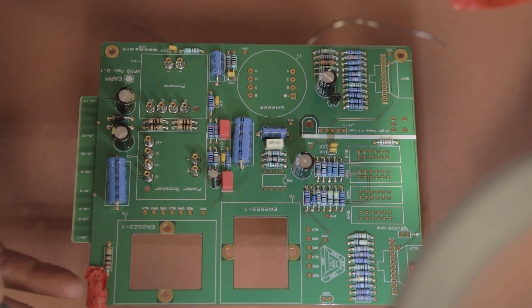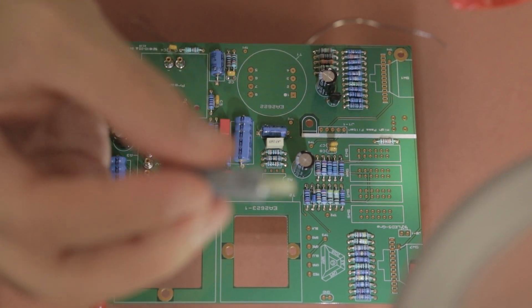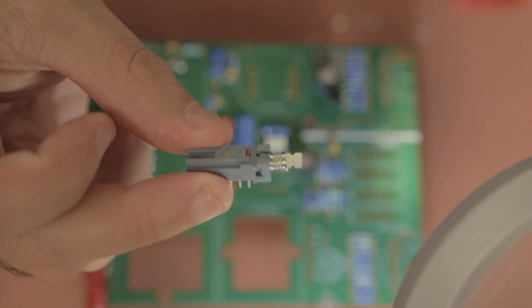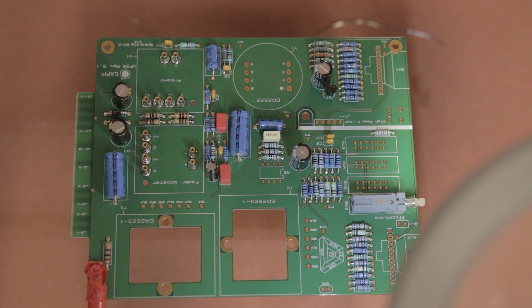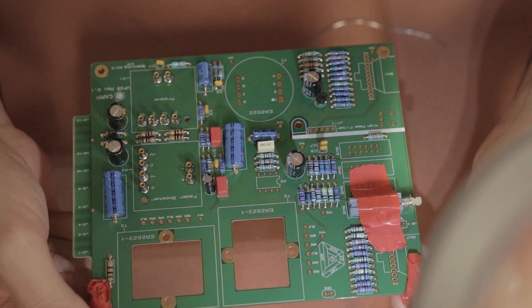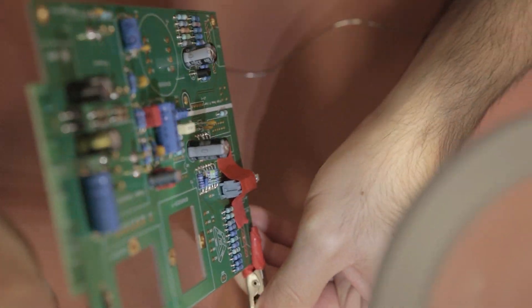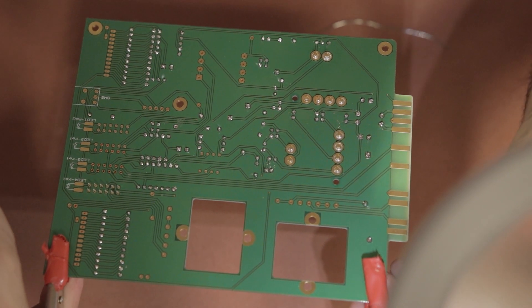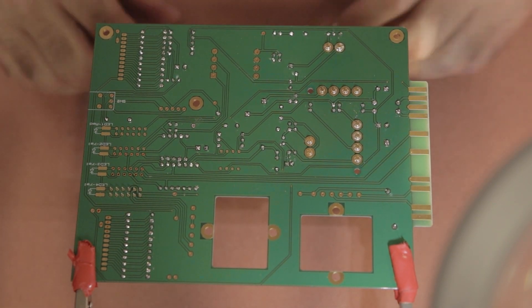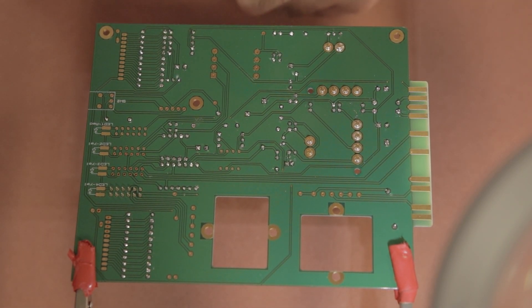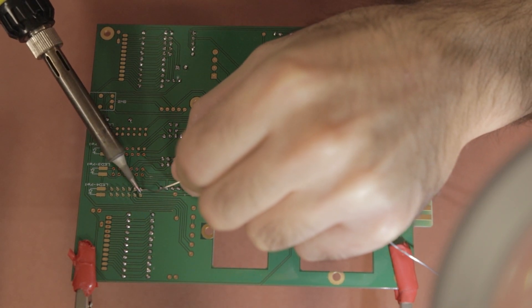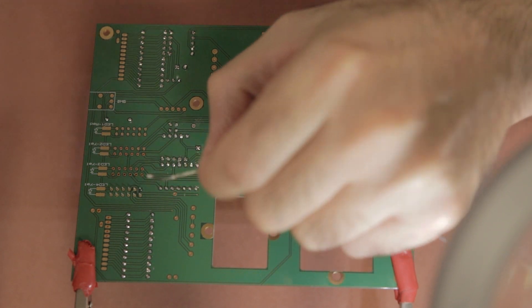So first up you want to install the C&K PHA push button switches. I like to put them on the board and then use a little bit of electrical tape to hold them in place. Then when I flip the board I make sure that the legs are coming through the holes in the middle, so that it's orientated correctly, and then once that's orientated correctly I will solder one of the corner pins.